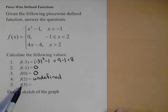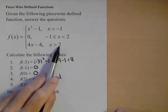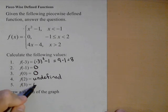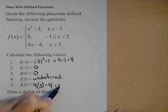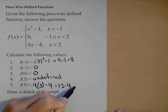And finally, f of three, well, three is greater than two, so we're going to use this last piece. So four times three minus four equals twelve minus four, which is, once again, eight.